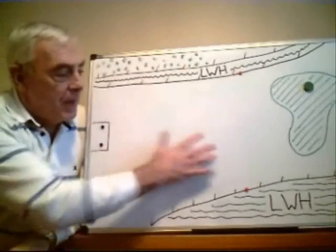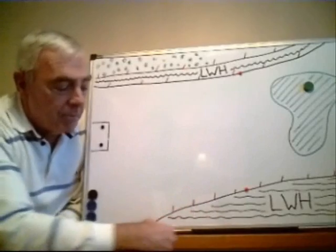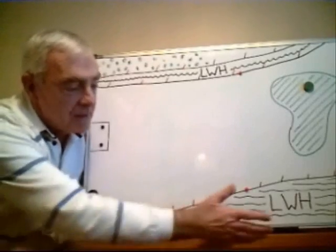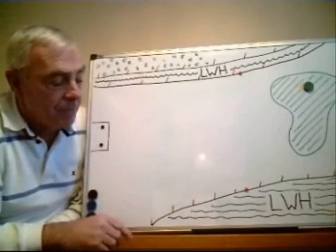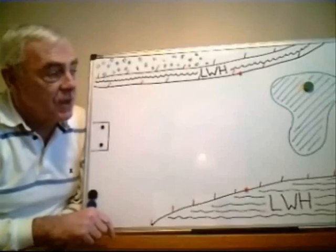In my par three layout here, I have a lateral water hazard that borders the course. The boundary of the course is the other side of the water hazard, and therefore it has to be designated as a lateral water hazard.